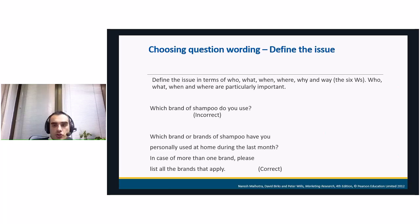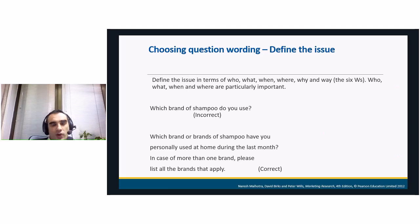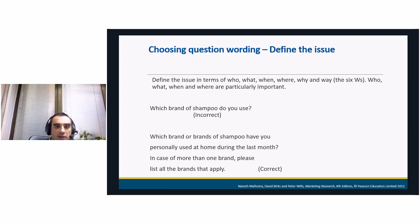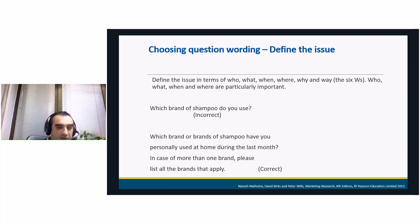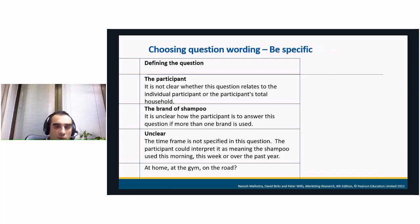Choosing question wording is like telling a journalist story — the issue should be defined in terms of the six W questions: who, what, when, where, why, and way. Particularly important are who, what, when, and where. For example, if I ask 'which brand of shampoo do you use,' you will ask where — at home, at the gym? But the question becomes much clearer if I ask: 'which brand of shampoo have you personally used at home during the last month, and if more than one brand, please list all.' These four W's actually form the question and you should be as specific as possible.